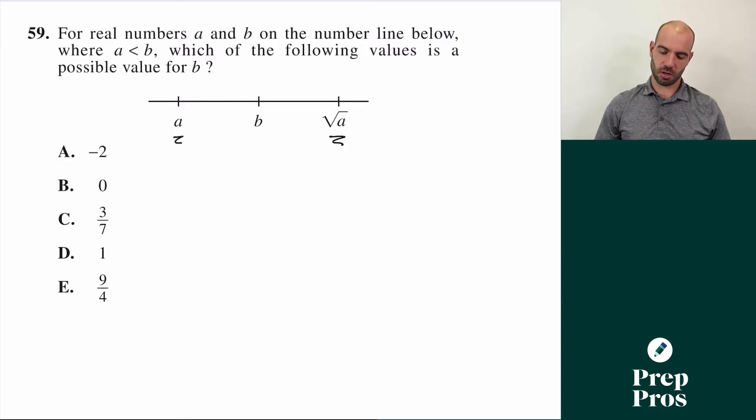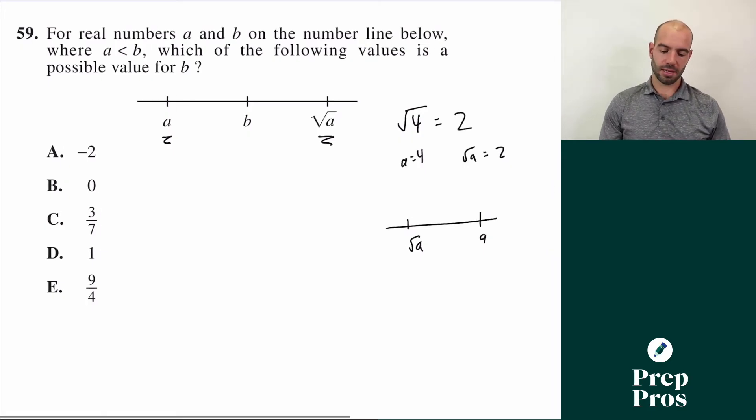Usually we're used to the square root being smaller. If I have something like the square root of four, the square root of four is two. That means that our A value normally on the number line would be further right. If A was four, and root of A equals two, usually we'd see A over here and root A over here. So now how is it gonna be backwards? Well, we can think what if instead, this has to do with a fraction where it's between zero and one.